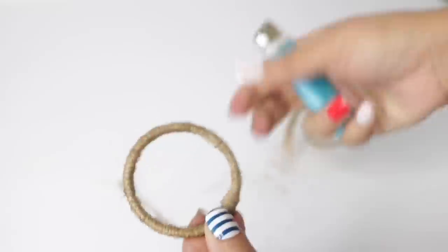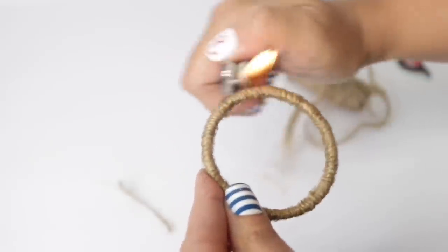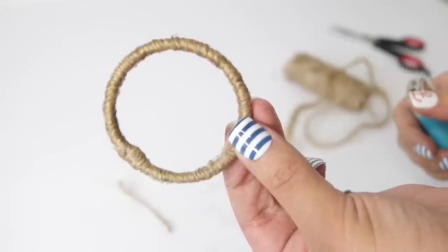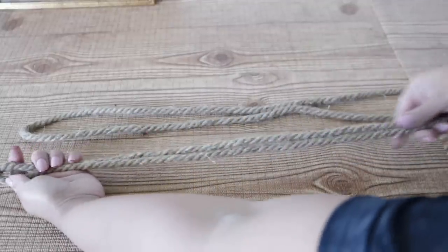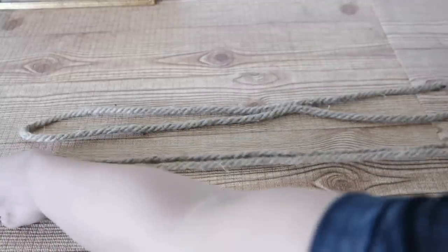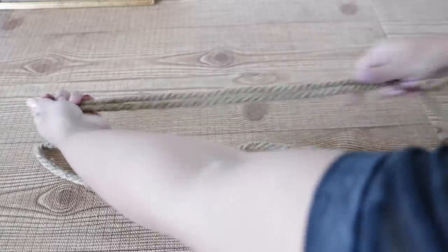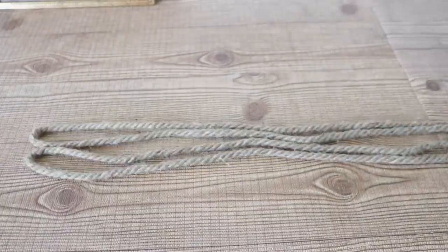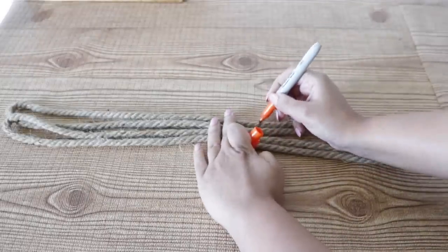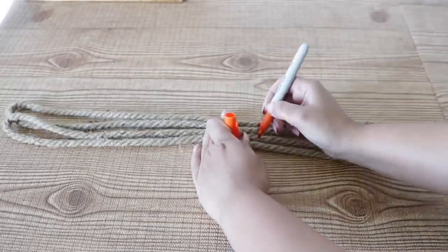I ended up using the rest of the rope from my previous tutorial, so it was 12 feet which I had cut in half and then folded those in half so I had two equal pieces. Once I had those two equal pieces, I made my marking where I wanted my shelf to fit. The marking is pretty important.